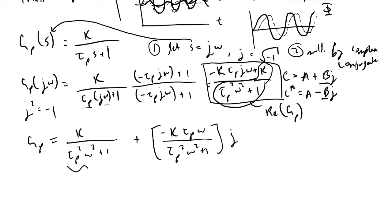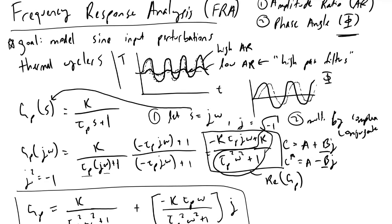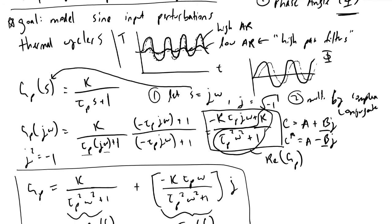Now we can see what the real part of g is, as well as the imaginary part of g. And now that we've done that, we can evaluate very quickly what our amplitude ratio and phase angle are.